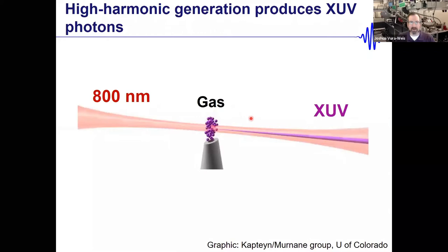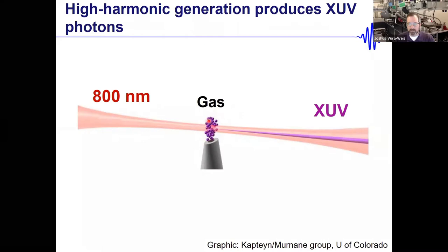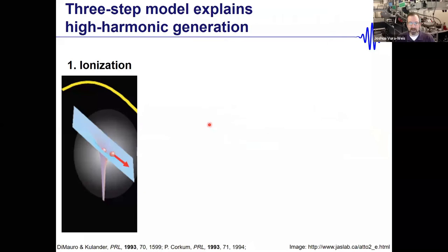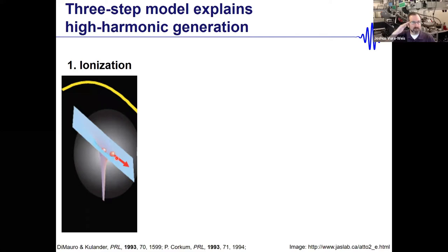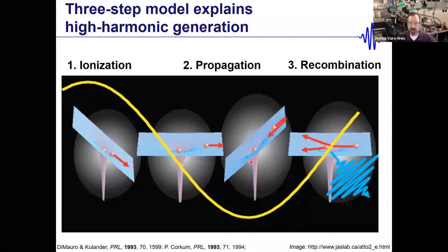The way we make these XUV pulses: we take a near-infrared laser pulse and focus it into neon gas, and we get an XUV pulse out the other side. Looking at one neon atom more closely — in the presence of a very strong oscillating electric field from the laser pulse, we can perturb the Coulomb potential so much that we rip an electron away from the neon, accelerate it in the oscillating field, and slam it back into the nucleus.